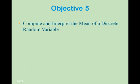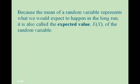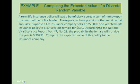Objective 5: compute and interpret the expected value of a discrete random variable. Because the mean of a random variable represents what we expect to happen in the long run, it is also called the expected value, or E of x. In this example, a life insurance company sells a $250,000 one-year term life insurance policy to a 49-year-old female for $530.